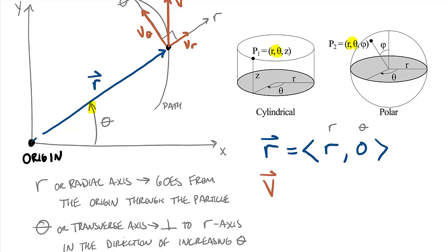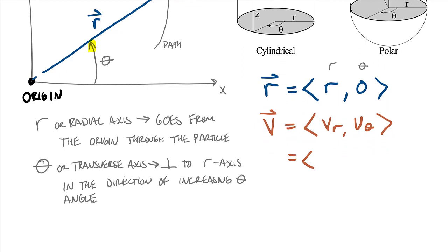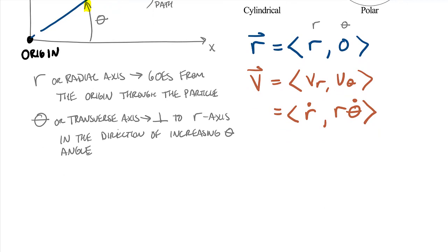We can write the velocity vector as v = [v_r, v_theta]. This is related to the time rate of change of the r and theta position components. The first term is straightforward: v_r = r_dot, the time rate of change of the magnitude of r. The v_theta term is the time rate of change of the direction of r, which equals r times theta_dot.